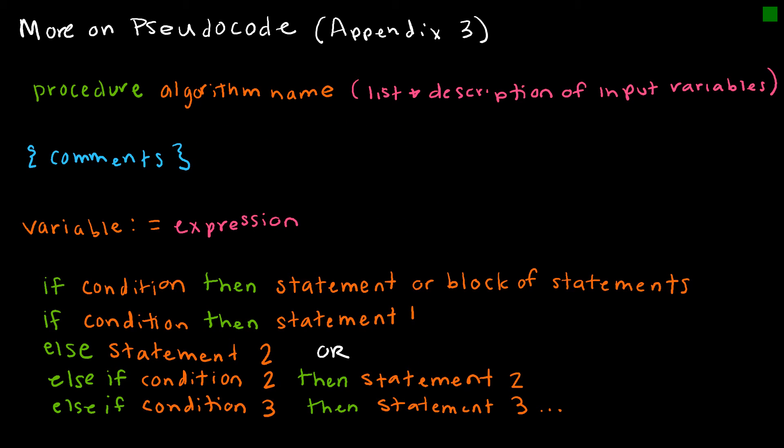There is a whole lot on pseudocode in your textbook in Appendix 3, and I've just listed some of them here just so that we're used to or somewhat familiar with things that we might see in the pseudocodes for the rest of the algorithms we'll talk about in this section. So notice, if you're going to do a procedure, the procedure, we would first write procedure, and then we would say what the algorithm name is. So on the last one, I said max. And then this is the list and description of the input variables, and that is what I did before. I said, we're using a_1, a_2, a_3, etc., and those are all integers.